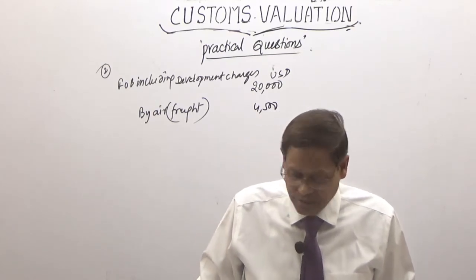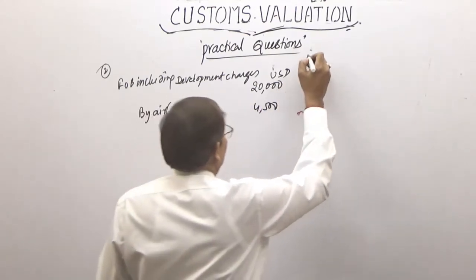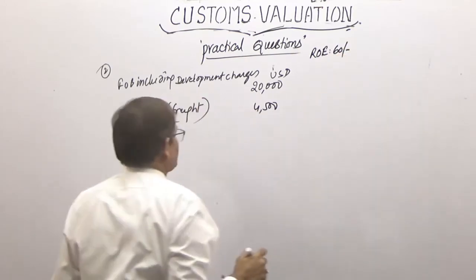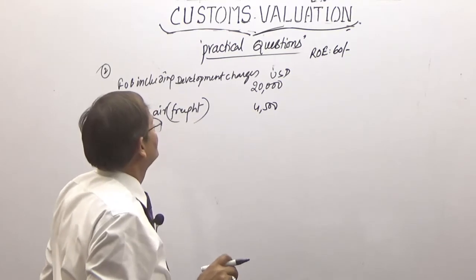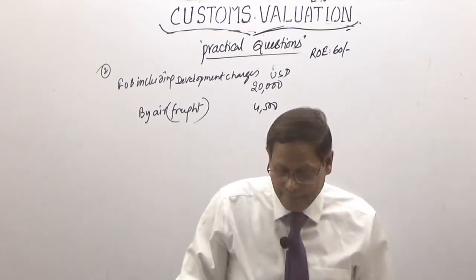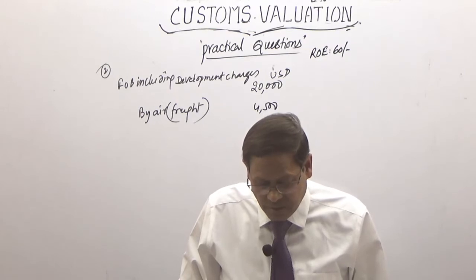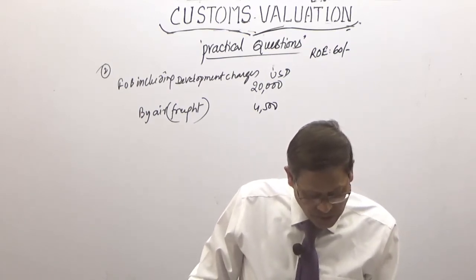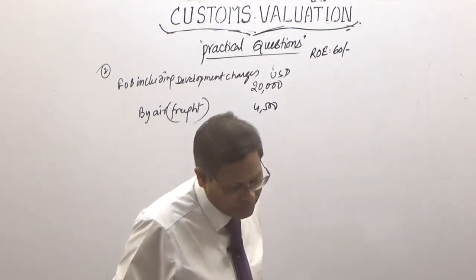The exchange rate is 66, as notified by the CBC. Rate of exchange: 1 USD = ₹66. Insurance details are not separately provided. There is a commission payable to an agent in India of ₹12,500.